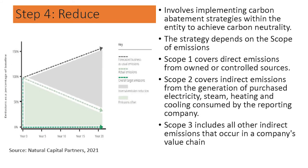Reducing involves implementing carbon abatement strategies within the entity to achieve carbon neutrality based on the scope of emissions. Scope one carbon emissions cover direct emissions from owned or controlled sources. Scope two carbon emissions cover indirect emissions from the generation of purchased electricity, purchased steam, purchased heating and cooling. Scope three carbon emissions include all other indirect emissions that occur in the company's value chain — which is critical, because if you are in a supply chain, the main contractor will force you to reduce your carbon footprint.